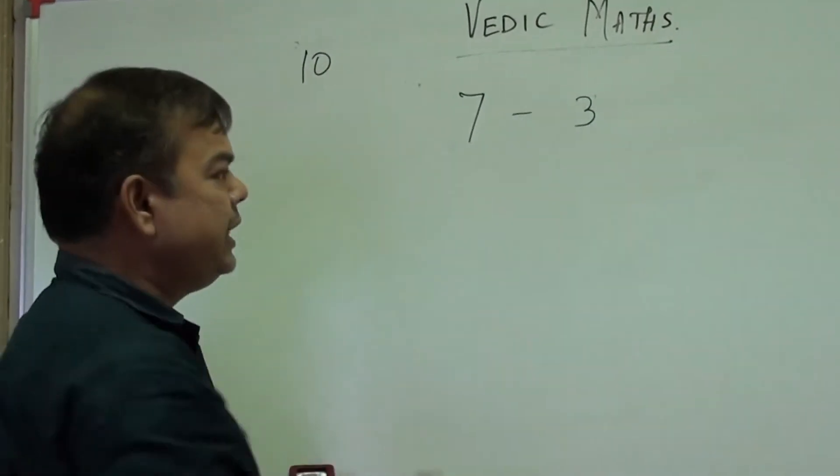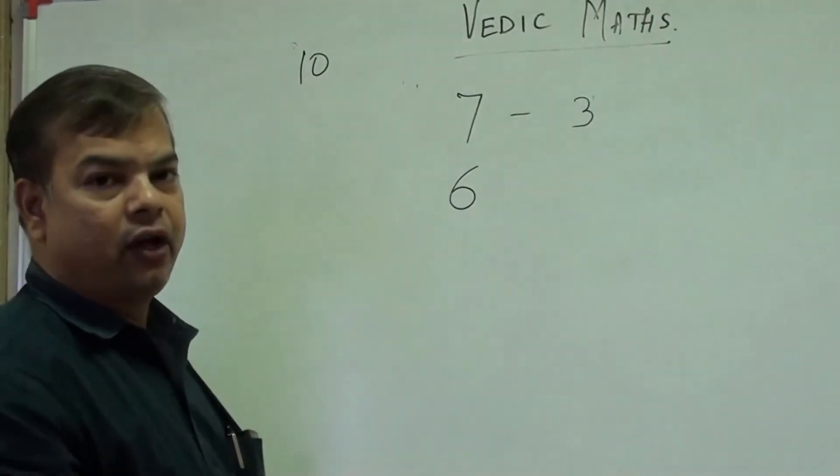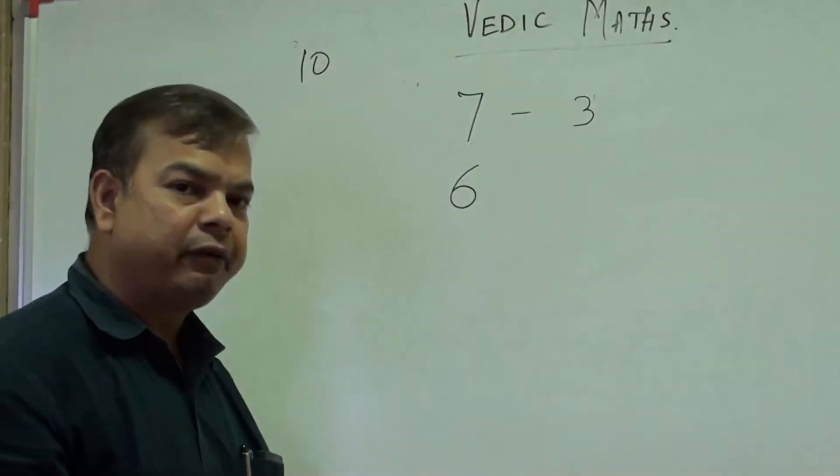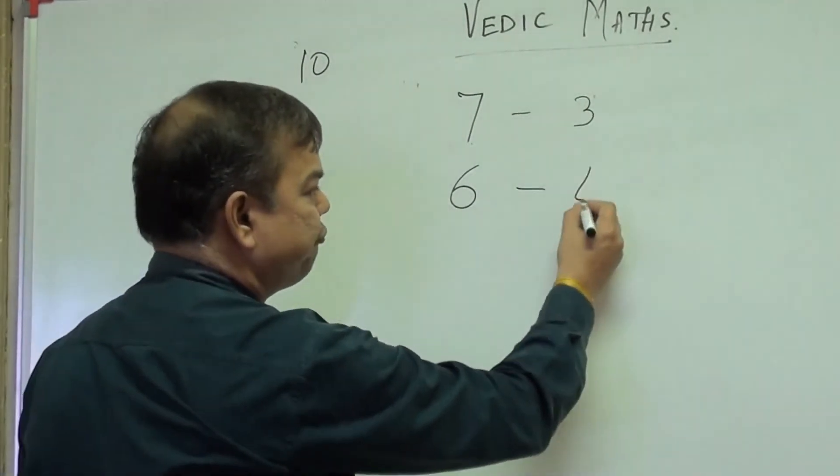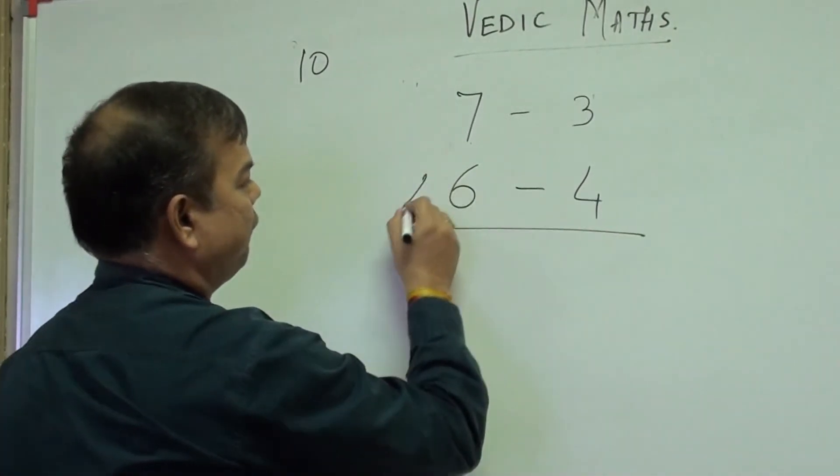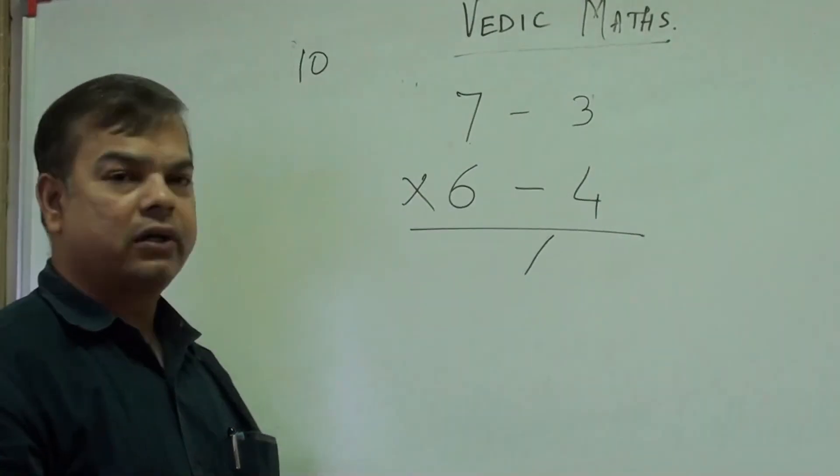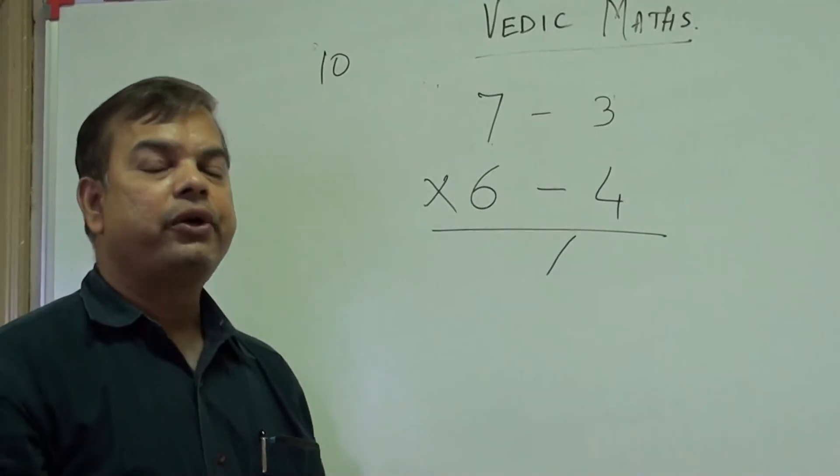7 multiplied by 6. Both are close to base 10. Now what we are going to do is: 7 we know can be written as 7 minus 3, and 6 can be written as 6 minus 4. Now you write an oblique sign below this, or a forward stroke, and you have to multiply minus 4 with minus 3.